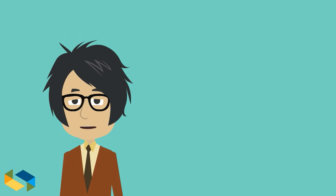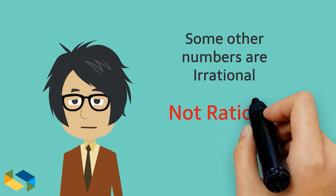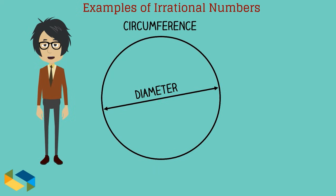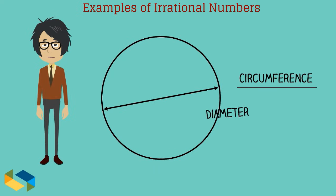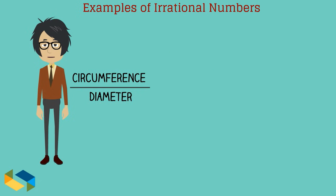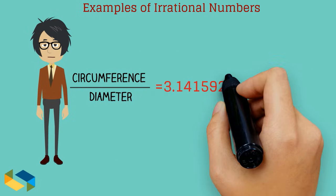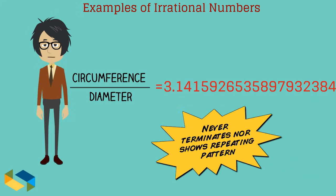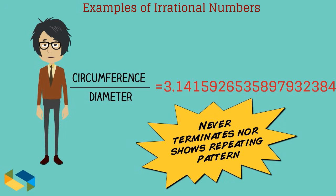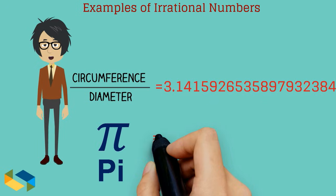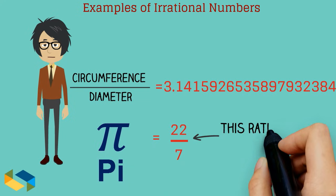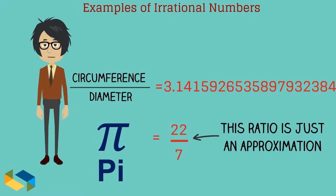On the other hand, there are some numbers that are irrational or not rational. Try dividing the circumference of a circle by its diameter. The answer goes on and on forever. The calculation never terminates, nor shows any repeating pattern of any sort. This is the number pi, also written as 22 upon 7. But this ratio is just an approximation, not accurate.